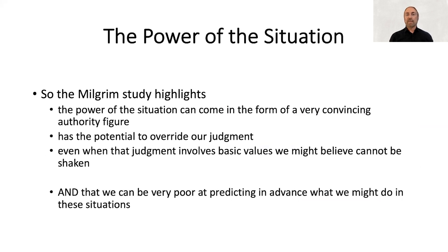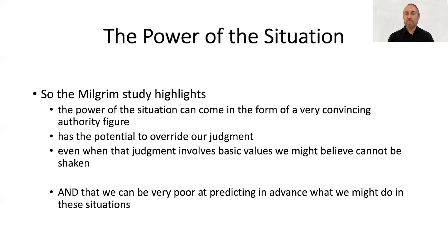What the Milgram study highlights is that the power of the situation can come in the form of a very convincing authority figure who has the potential to override our judgment — even when that judgment involves basic values we take for granted, that we might believe could never be shaken. The other critical thing Milgram's study demonstrated is that we are all very poor sometimes at predicting in advance what we might do in these situations. You might say you would never harm another person, but the problem is we underestimate the power of this authority.